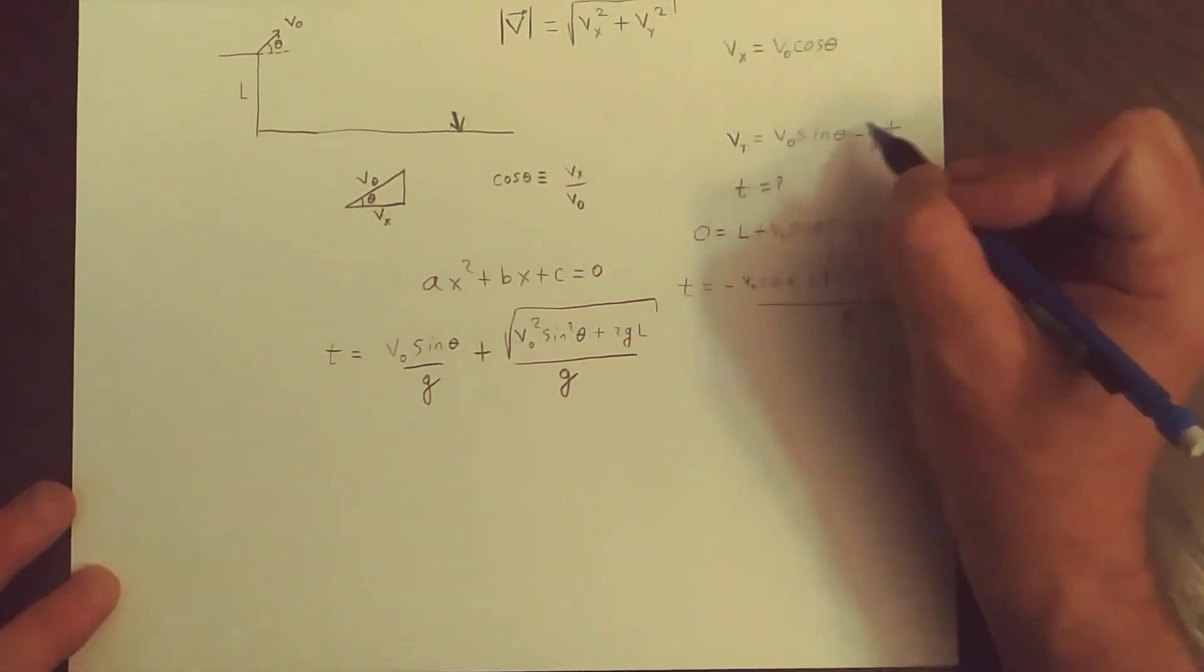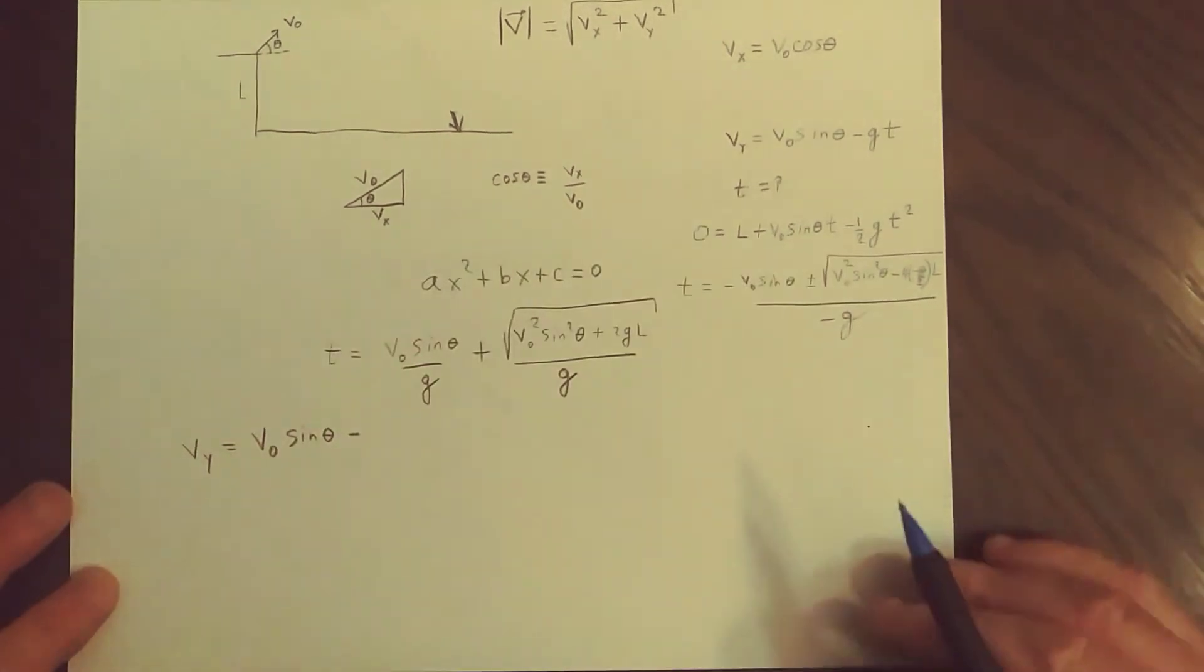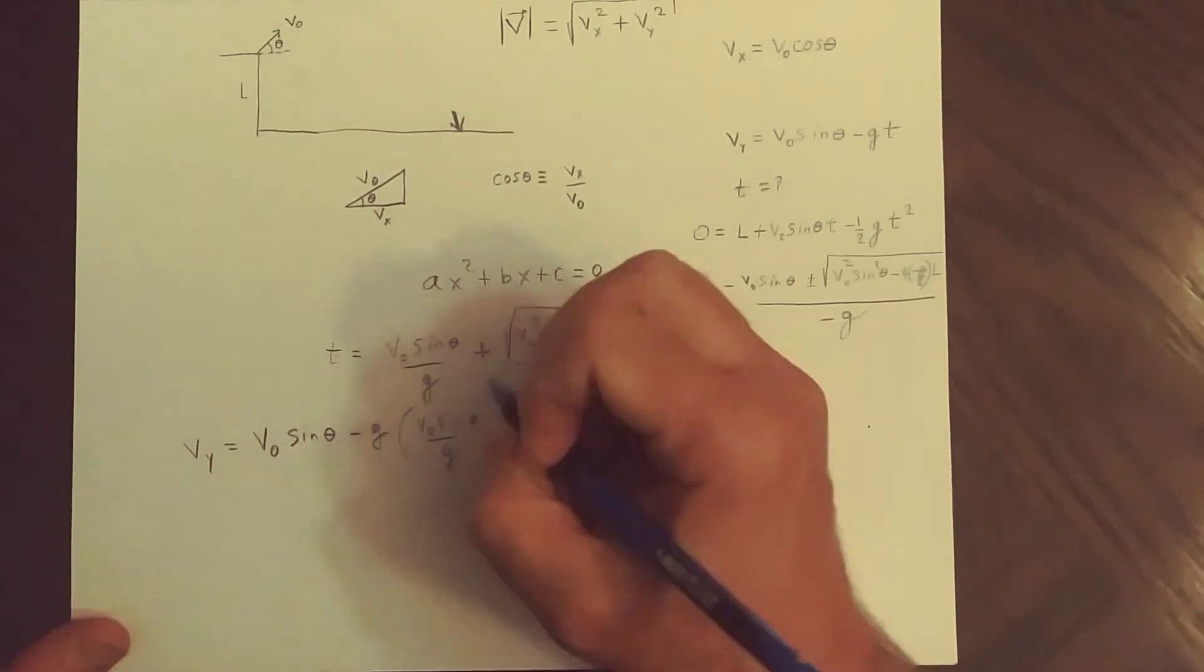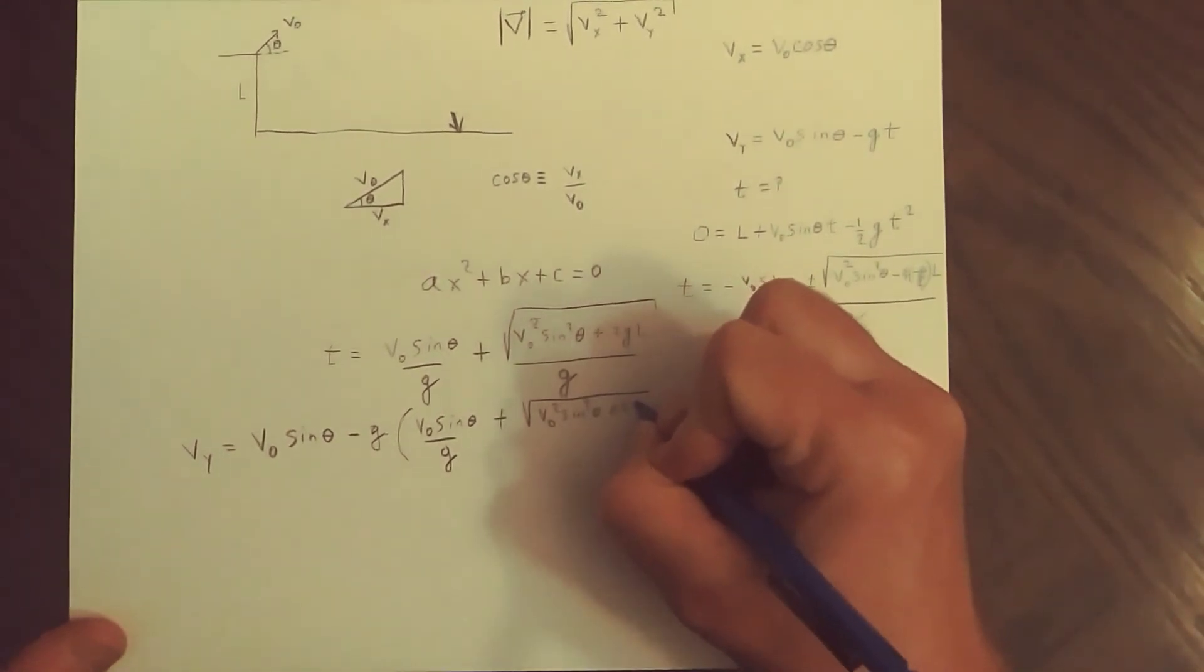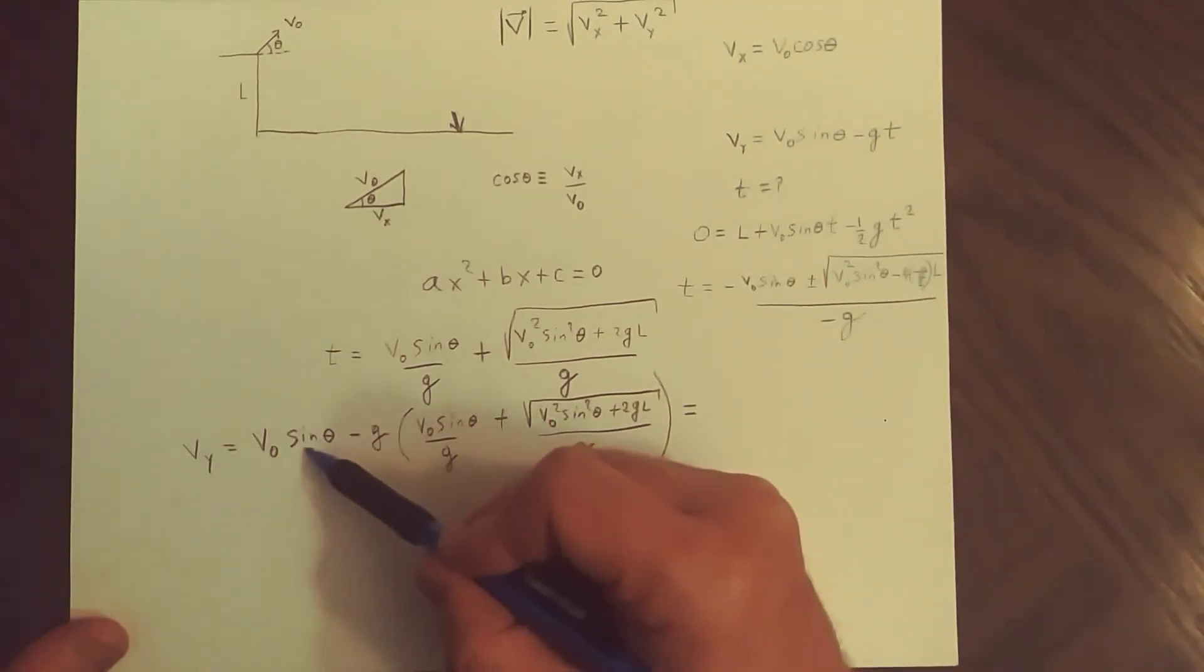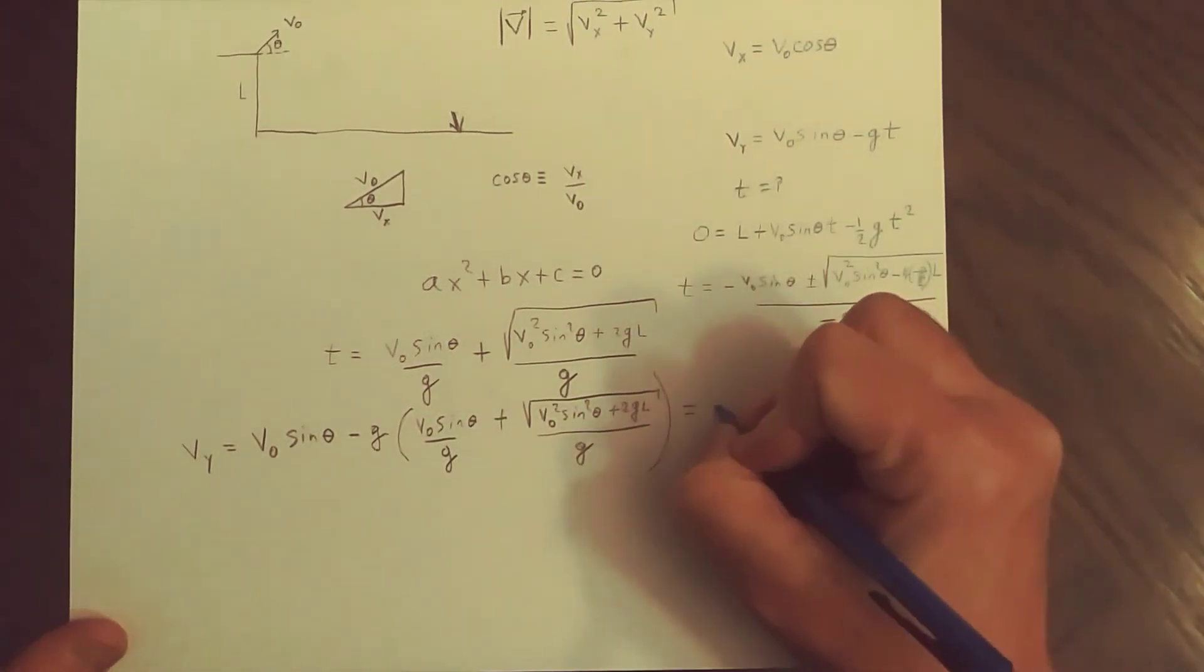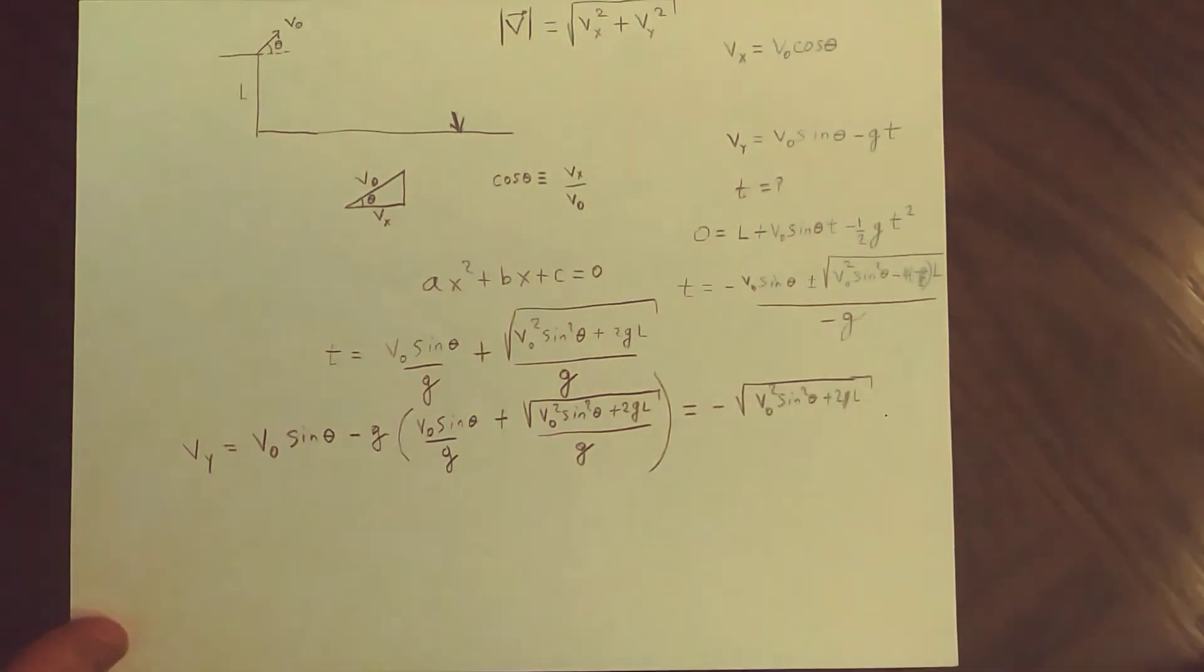So what we get now when we go back to this equation is that V_Y is equal to V naught sine theta minus G times this time. So we get minus G times this, so minus G times V naught sine theta over G plus the square root of all this over G. So notice here we have V naught sine theta and the first term gives us minus V naught sine theta because the G's cancel. So the first two terms go away and then we have a minus G times this term which makes it minus the square root of all of that. And so that's the V_Y.